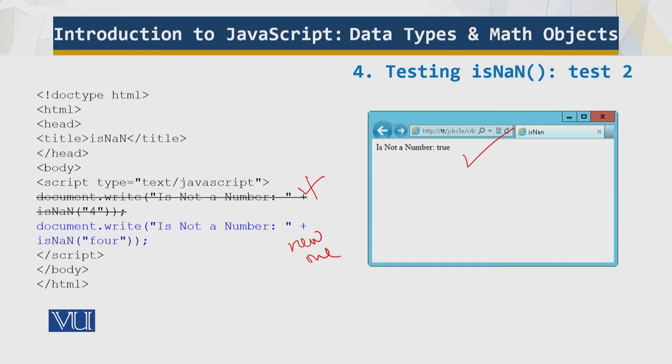In second test case, because the number four is represented as a string of non-numeric characters F-O-U-R, the function returns true. The string four is not a number. Now you should understand this, the difference. So the isNaN function is used frequently when validating input to determine whether something was entered as a number or as a text. So this helps in validation.